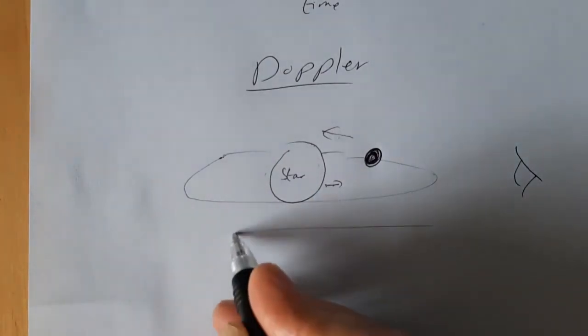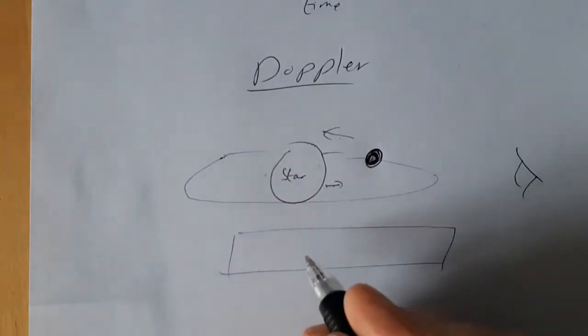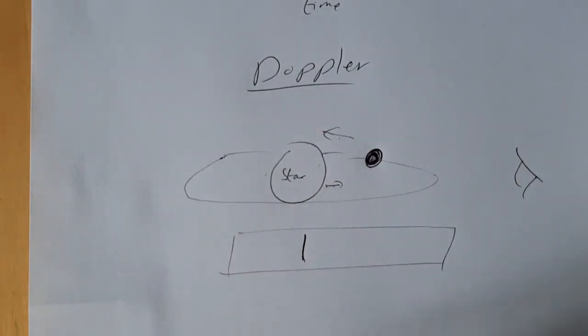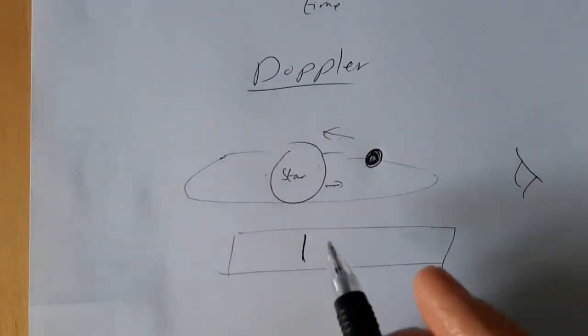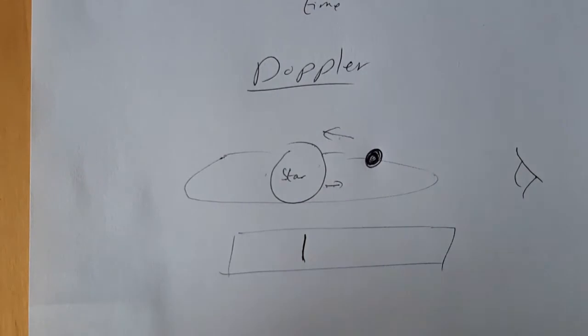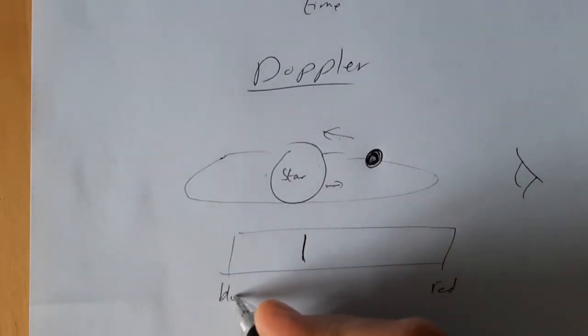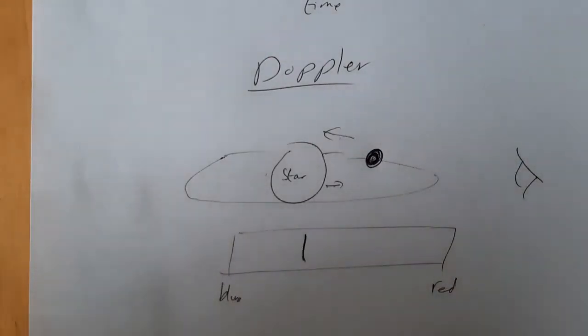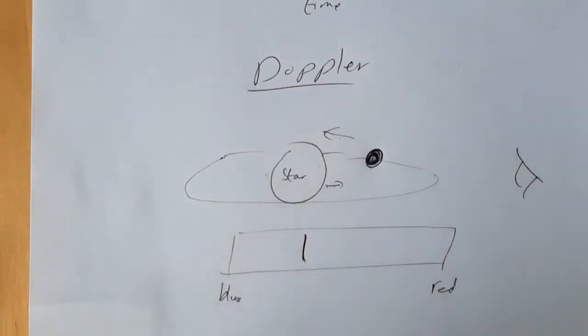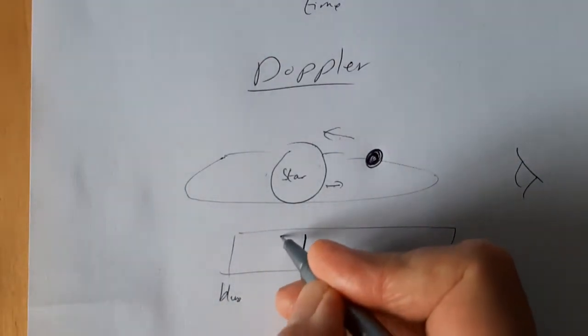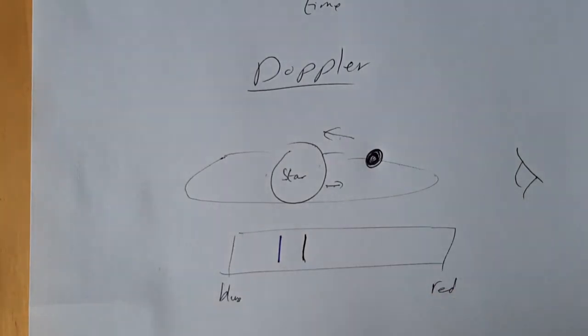So again, what we would see is some kind of absorption line in our spectra. When it's going across our line of sight, it's in the normal place. Then the star moves towards us, and if you make this the red end and the blue end temporarily, the line is blue shifted. So it's not blue, it's still black, but it goes into the blue part of the spectrum.